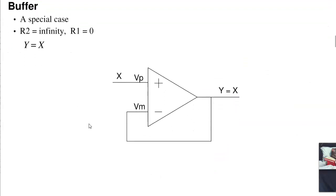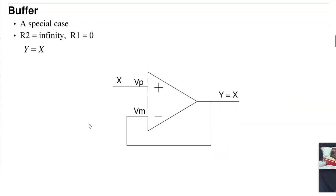A special case of the non-inverting amplifier is the buffer. If I just short the output to the input, what I get is V plus equals V minus, V minus equals Y, so Y equals X.